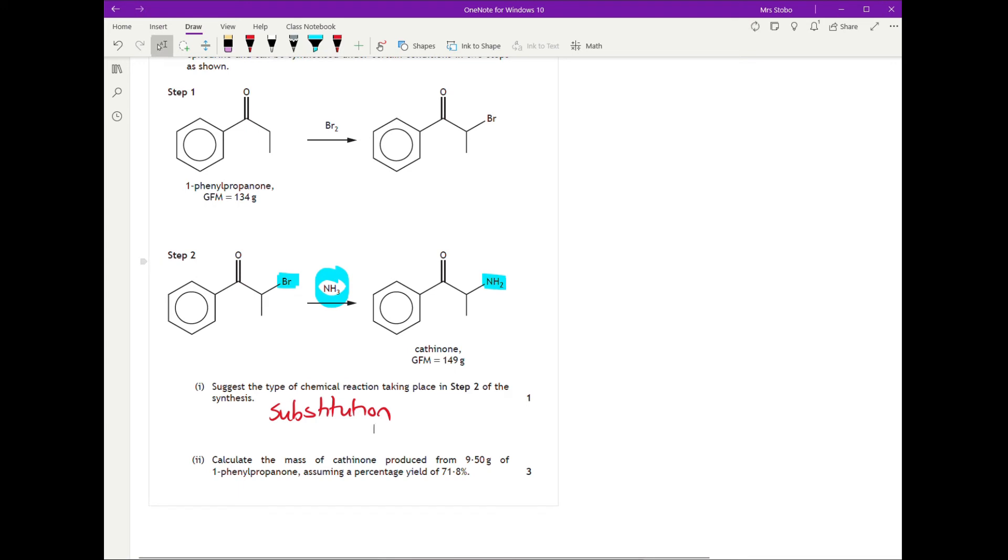In reality, since we've got an NH3 and that's got its lone pair thing, it's going to be nucleophilic, but substitution is going to get the mark. Calculate the mass of cathinone produced from 9.5 grams of 1-phenylpropanone, assuming a percentage yield of 71.8%. Now frankly, I think for three marks that's really generous, but it depends how you work it.